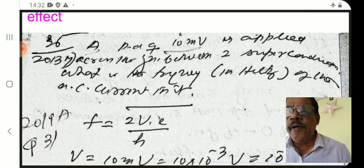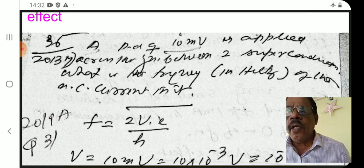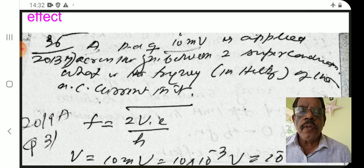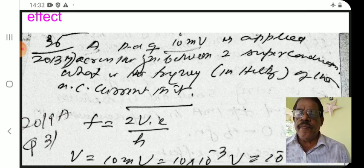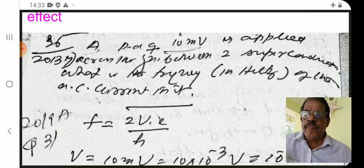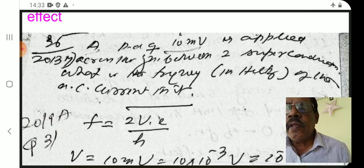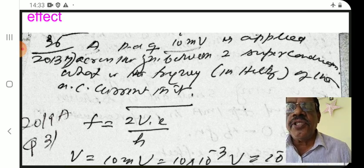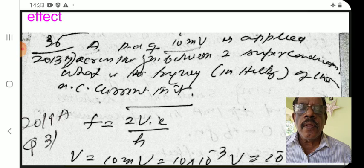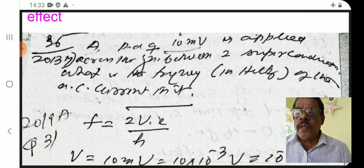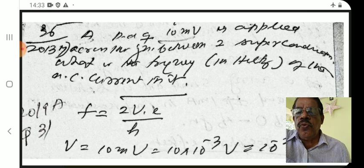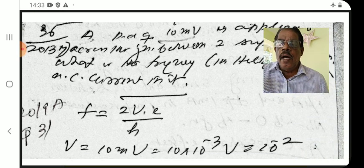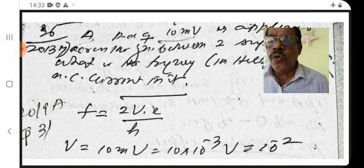A DC voltage of 10mV is applied across the junction between two superconductors. What is the frequency in hertz of the AC current? This is an application of the AC Josephson effect. The formula is F = 2eV / h, which gives the AC frequency in the Josephson effect.